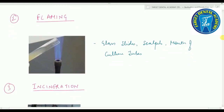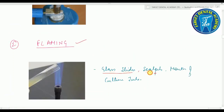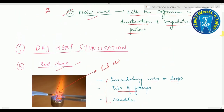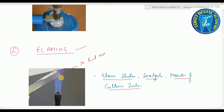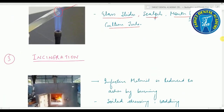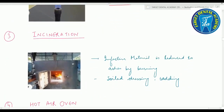Second method is flaming. Glass slides, scalpels, and mouth of culture tubes are passed through the Bunsen flame without allowing them to become red hot. The main difference: in red heat, needles and inoculating tips are held in the flame until they become red hot, while in flaming, glass slides and mouth of culture tubes are just passed through the Bunsen flame without becoming red hot.